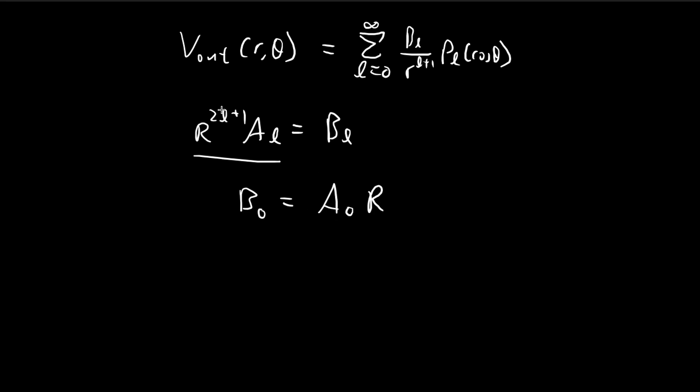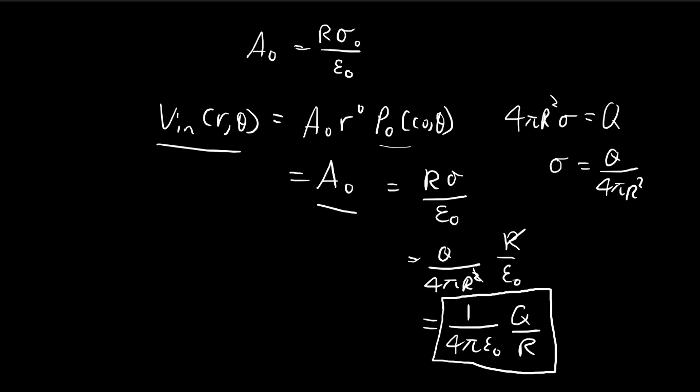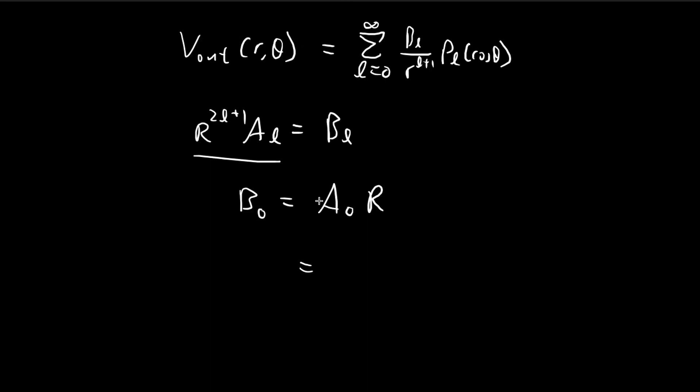So l is equal to 0, it's just 1r. a_0 is equal to r sigma divided by epsilon multiplied by another r. So this is b_0.